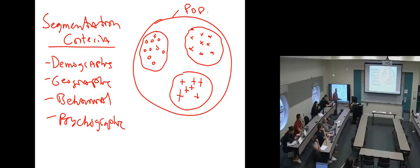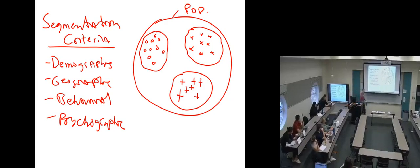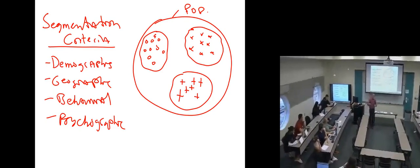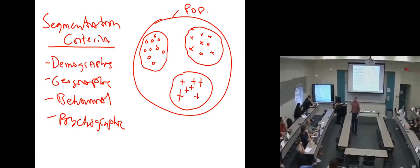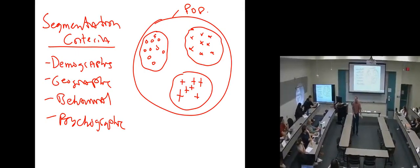This might be segment number one, segment number two, segment number three. Maybe we use the criteria of income — lower income, middle income, higher income — three different groups. Maybe we use age: young, middle, old. Maybe we have people who walk into the restaurant, people who call ahead and order, and people who use DoorDash — three different ways customers interact with us. That would be behavioral criteria.